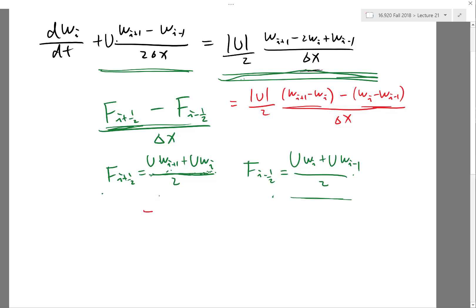So now we incorporate each term: fᵢ₊₁/₂ would be this minus absolute value of u over 2 times (wᵢ₊₁ minus wᵢ) divided by delta x, and fᵢ₋₁/₂ would be the same thing.